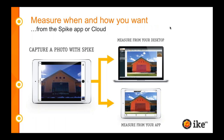Spike also gives you the flexibility to measure when and how you want. You have to capture the photo in the field with the Spike device in the mobile app, whether it's on your tablet or smartphone. People ask if they can import a photo into Spike — the answer is no, because it actually has to be captured with the Spike device attached, since we need to know how far back you were positioned. From there, you can measure from your desktop or from your mobile app.